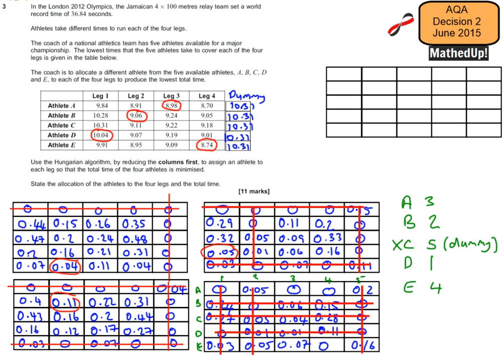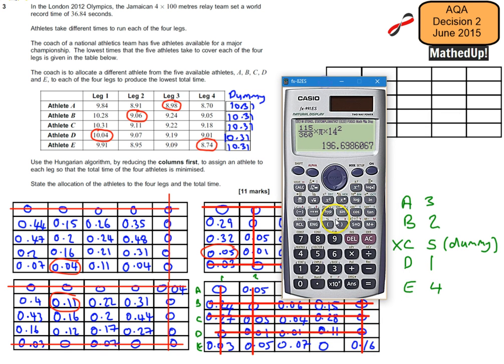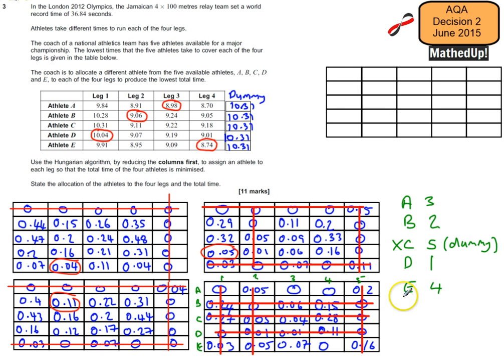And remember, we don't include our dummy over here, so I now sum all those together. So I've got 8.98 plus 9.06 plus 10.04 plus 8.74. And that gives me a total time of 36.82 seconds. So my total time, 36.82 seconds.